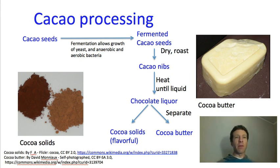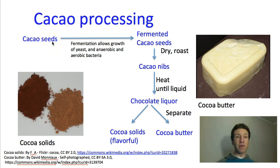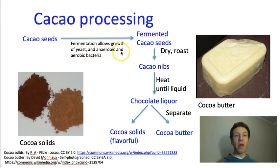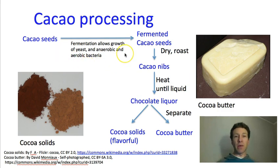Let's talk about how chocolate is processed. We start with cacao seeds from the Theobroma cacao plant, pulled out of the fruits. The first step is to ferment them — placing them in a moist environment. This is not true fermentation, because in true fermentation the environment is anaerobic (without oxygen). Here, part of the process will be aerobic. That said, we are basically allowing the seeds to be processed by microorganisms, which breaks down some of the sugars and other chemicals and changes the chemical composition.